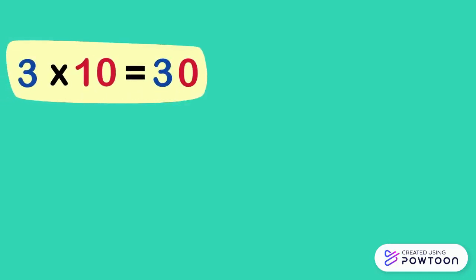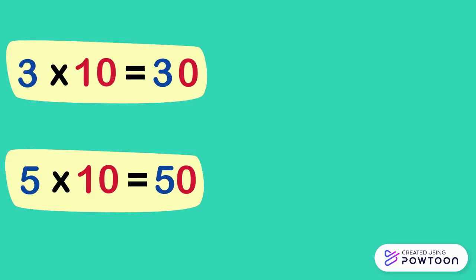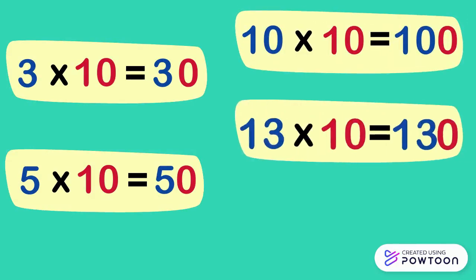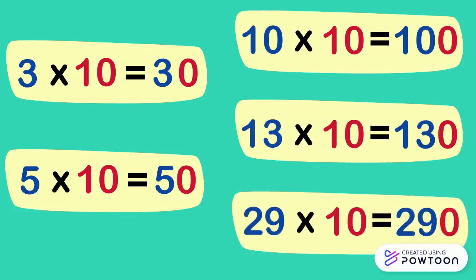Now, observe these equalities. 3 times 10 equals 30. 5 times 10 equals 50. 10 times 10 equals 100. 13 times 10 equals 130. And 29 times 10 equals 290.